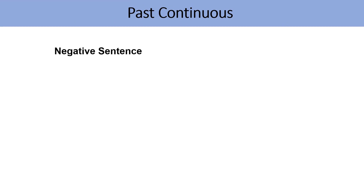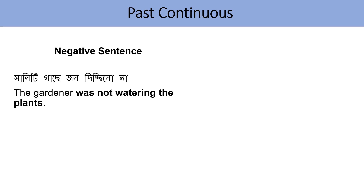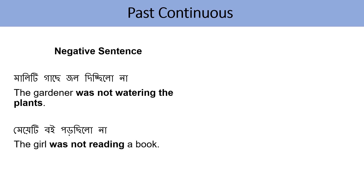If we want to make a negative sentence in Past Continuous, how do we say it? মালী গাছে জল দিচ্ছিল না — The gardener was not watering the plants. We add 'not' after 'was'. If it were positive: The gardener was watering the plants. To make it negative, 'not' is added after 'was'. মেয়েটি বই পড়ছিল না — The girl was not reading a book. Positive would be: The girl was reading a book.